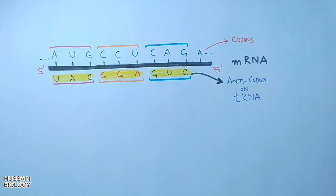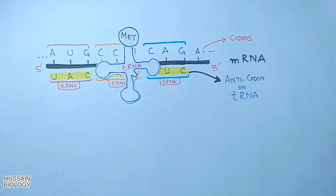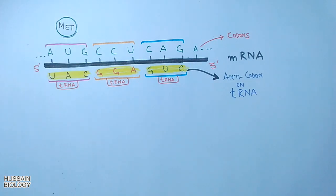To start the translation process, the tRNA is charged first with specific amino acid. In this case, the tRNA is first charged with methionine for AUG codon. Then the tRNA comes in and pairs with the codon of mRNA and gives off its first amino acid, which is methionine. Methionine is the start codon.